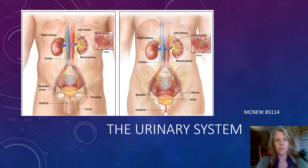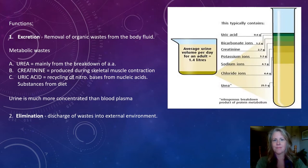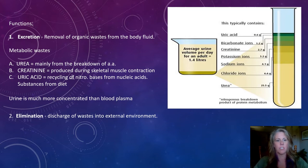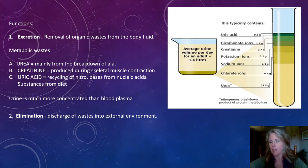In this segment, we're going to be talking about the urinary system for Anatomy and Physiology II. We will first start off talking about the functions of the urinary system. There are three major functions of the urinary system: excretion, elimination, and homeostatic regulation.